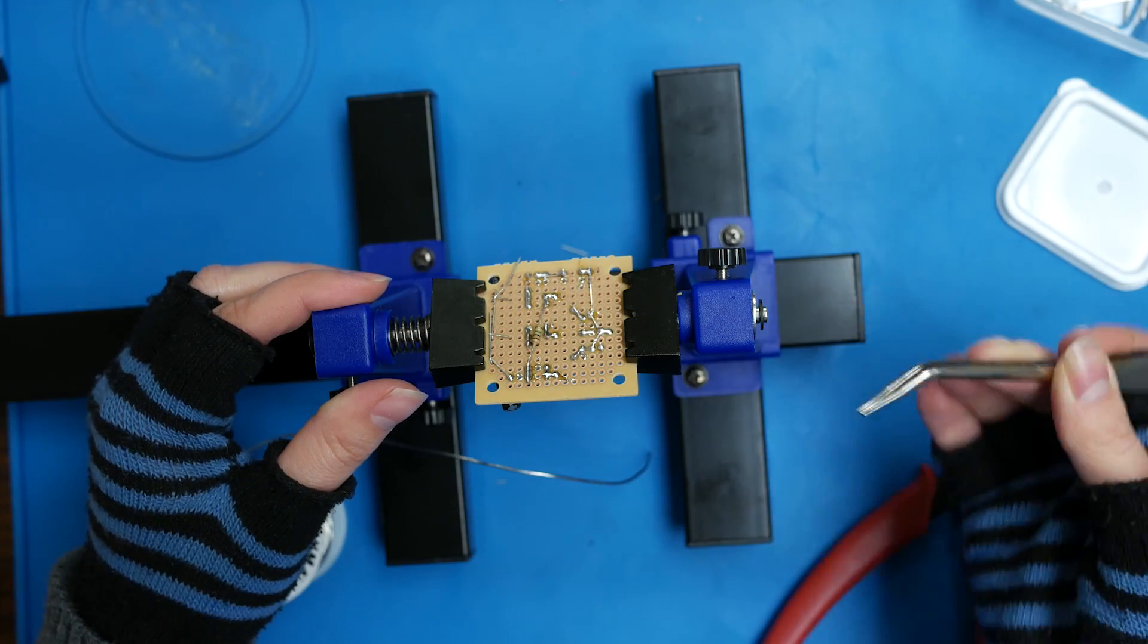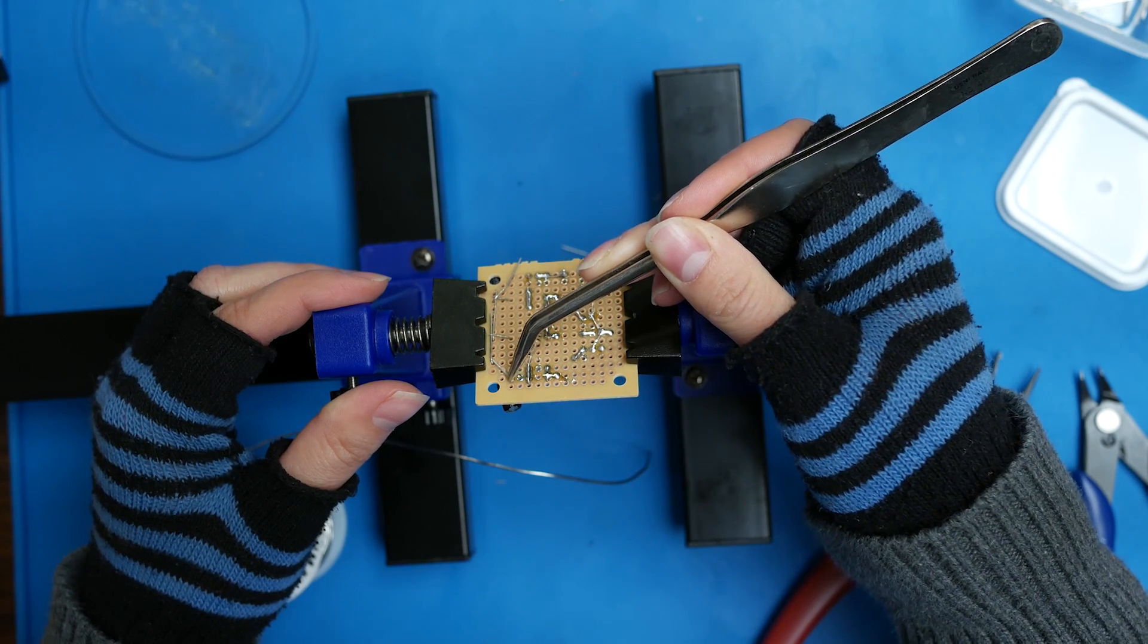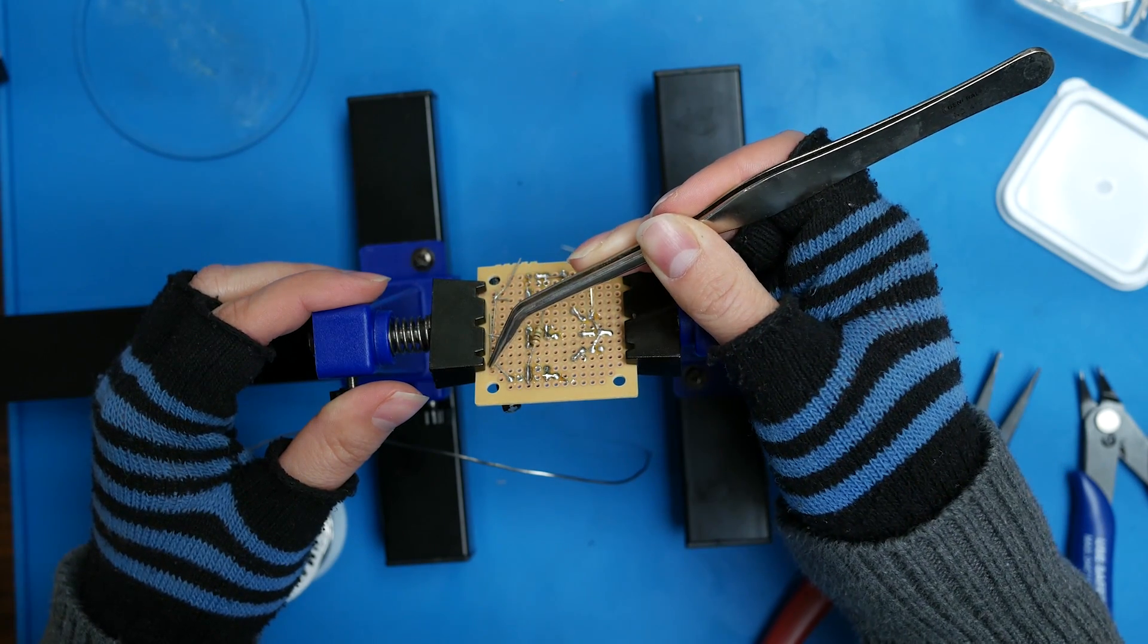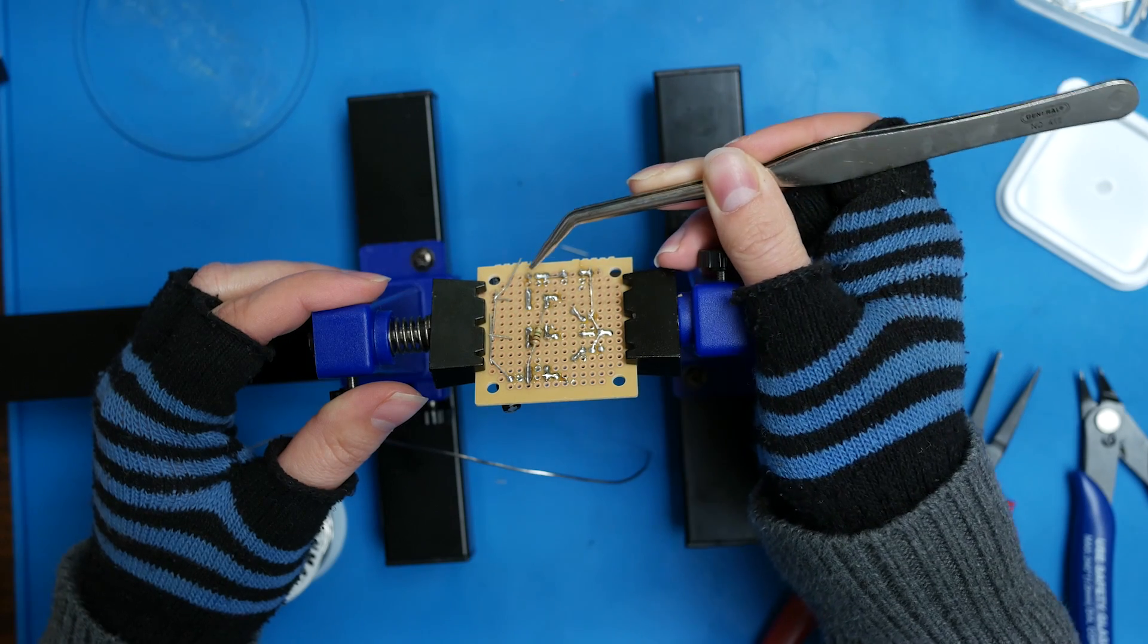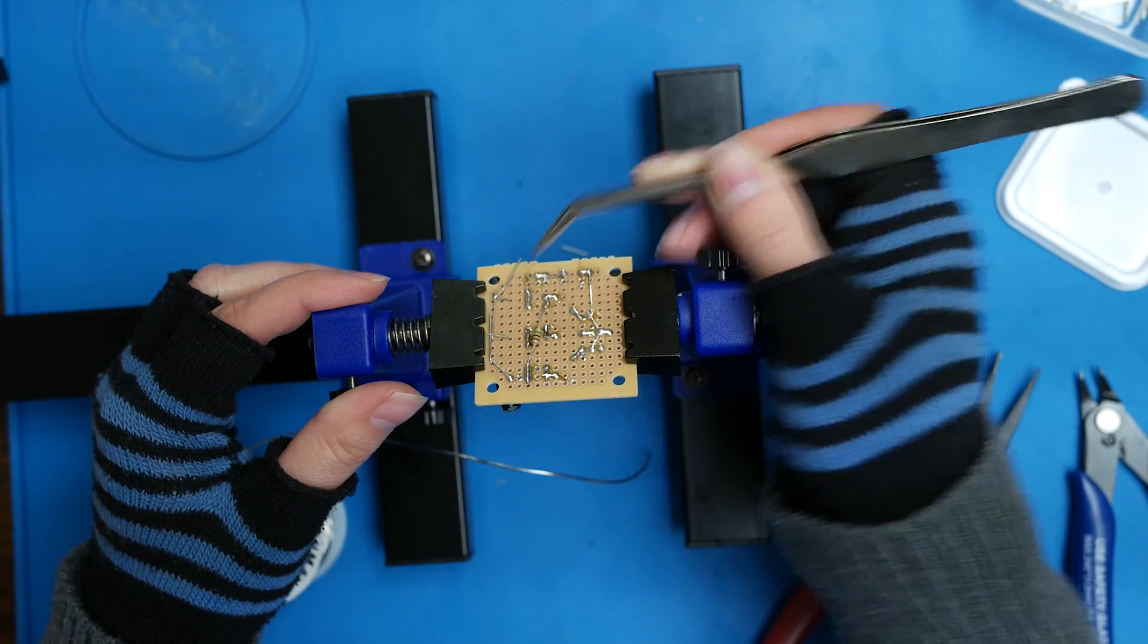Last, we'll connect everything to our ground plane. That's the source pins of our MOSFETs and the negative pins of our capacitors. Those are going to go down to the black power pin.